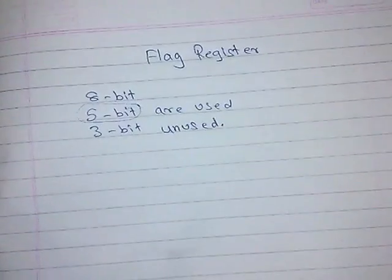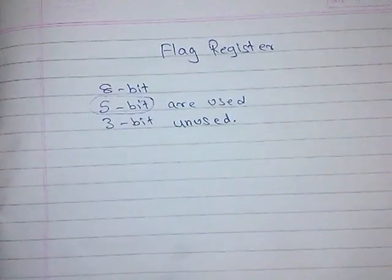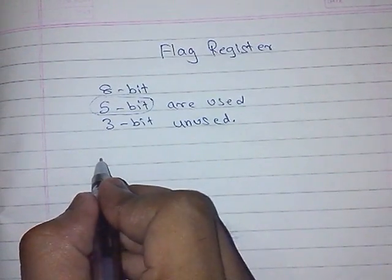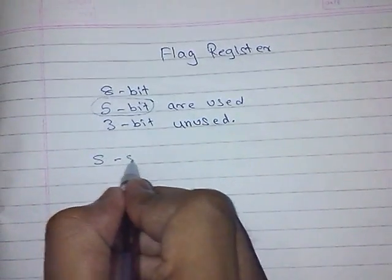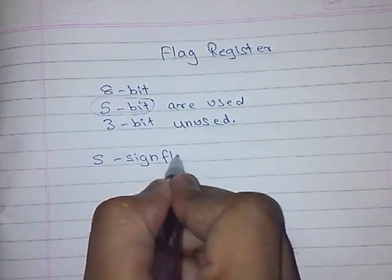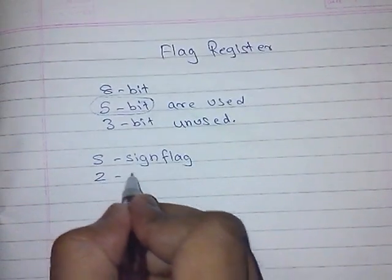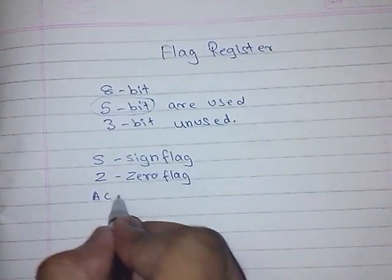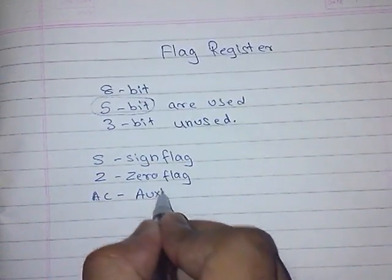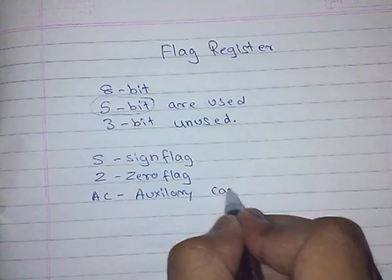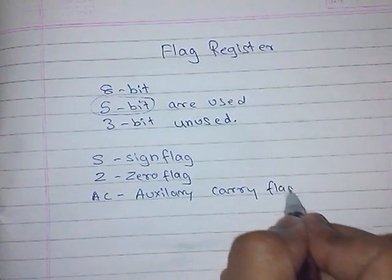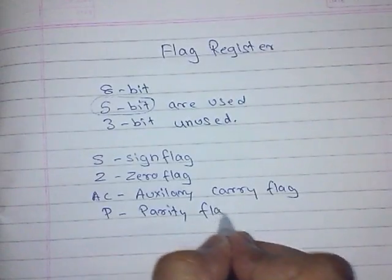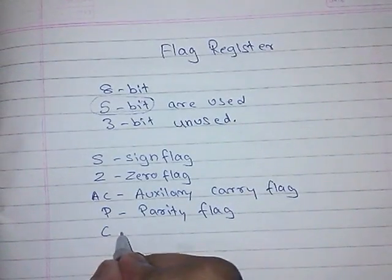Flag register contains 5 bits that displays the status of different things. For example, it shows sign flag, zero flag, auxiliary carry flag, parity flag, or carry flag.